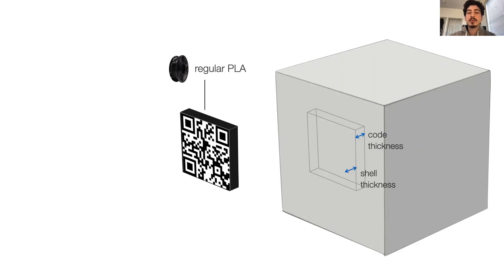However, the tag is printed using regular PLA while the main object is printed with IR PLA so that the IR camera can see through it and detect the tag. This is how we print infrared tags using our multi-material approach. While less preferred, a single material approach is also possible, which we described in the paper.